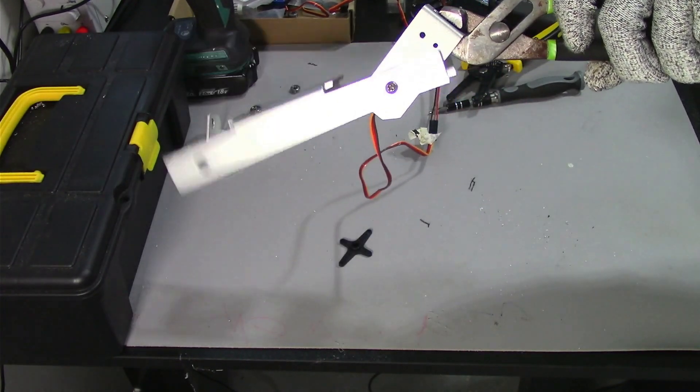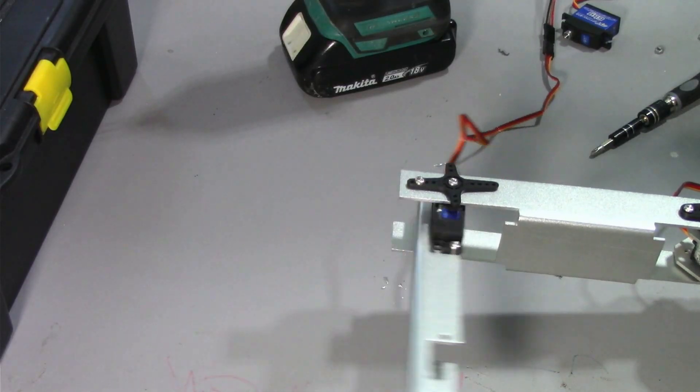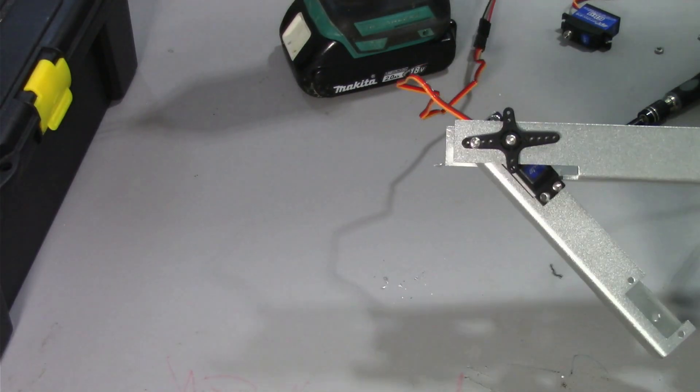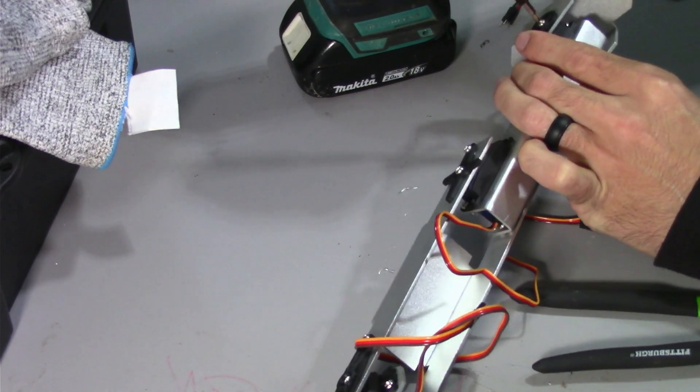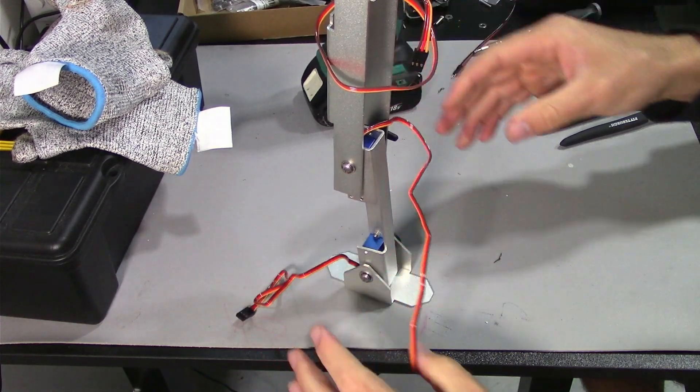Now it's time to test out the calf. Last thing to do is connect the foot, and there we have it, a fully assembled robot leg. Let's wire it up and test it out.